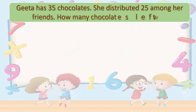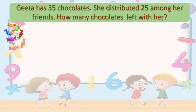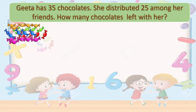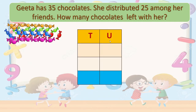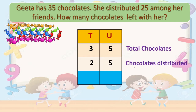Geeta has 35 chocolates. She distributed 25 chocolates among her friends. How many chocolates are left with her? Here you can see 35 chocolates that are with Geeta. We will make a table and write 35 — that is total chocolates with Geeta. And 25 is the number distributed among her friends. We will subtract 25 from 35.